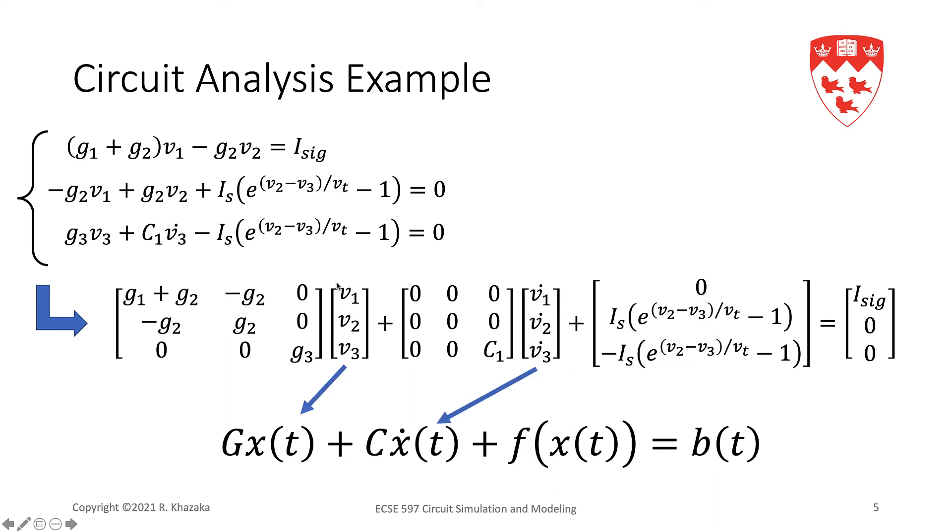My unknown vector V1, V2, V3, which are the nodal voltages, is in X. So we have X and we have its derivative, X_dot.